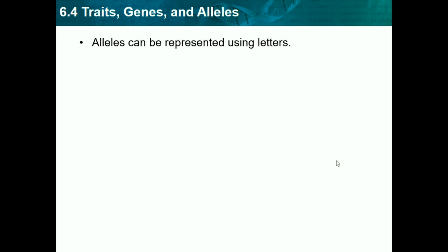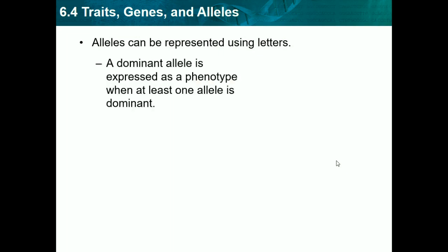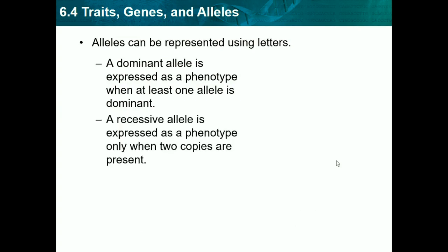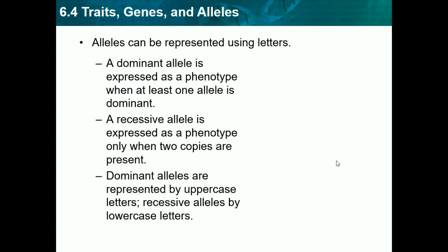Alleles can be represented using letters. A dominant allele is expressed as a phenotype when at least one allele is dominant. A recessive allele is expressed as a phenotype when two copies are present. Dominant alleles are represented by uppercase letters while recessive alleles are represented by lowercase letters. Dominant is more in charge while recessive can't take charge. So for your phenotype to show — let's say for you to have blonde hair, and blonde hair is a recessive trait — you would have to have two recessive genes, shown as two lowercase letters.